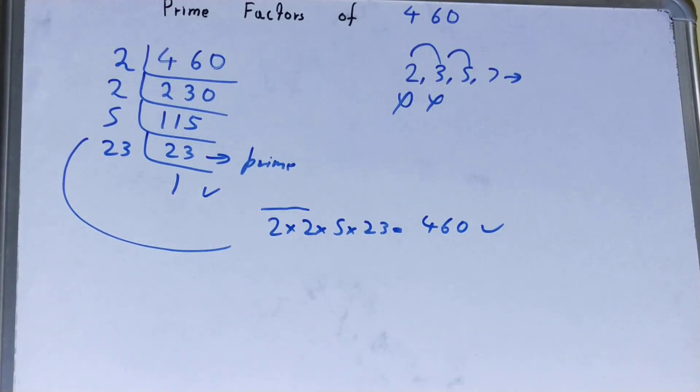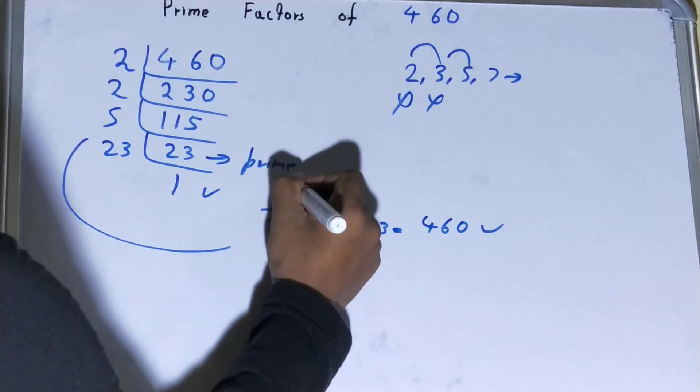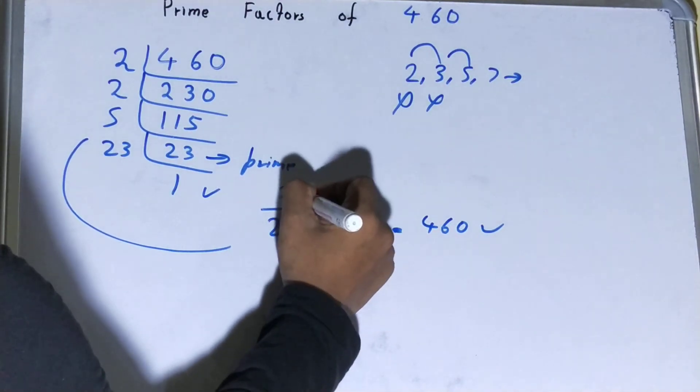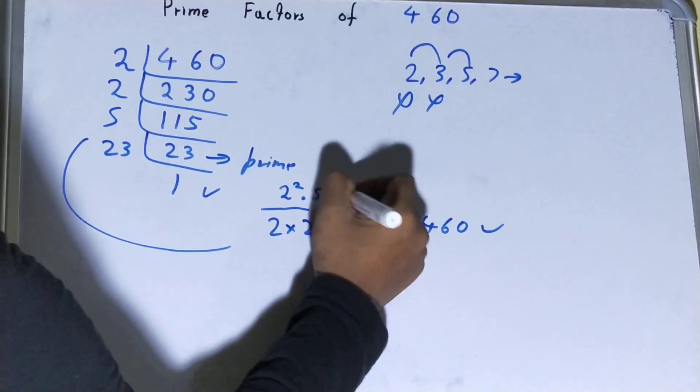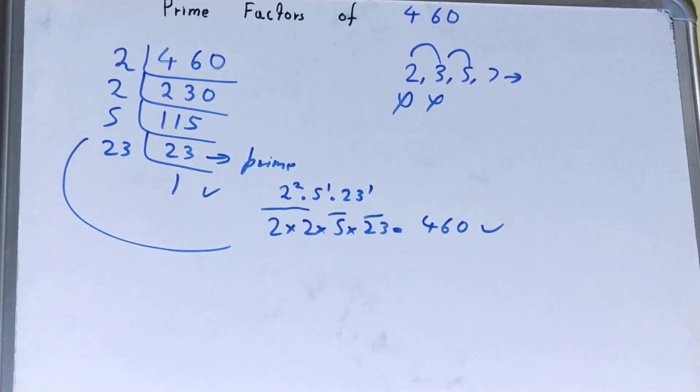You can also write it in a different way. You have 2 times 2, so you can write it as 2 raised to power 2. You have 1 times 5, so you can write it as 5 raised to power 1. You have 1 times 23, so you can write it as 23 raised to power 1.